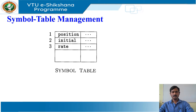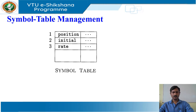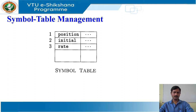The symbol table is a data structure containing a record for each variable name with its fields for the attributes of the name. The data structure should be designed to allow the compiler to find the record for each name quickly and to store or retrieve data from that record quickly.